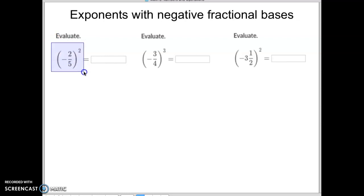This first one looks a little difficult, but it's really not. All it means is that everything inside this parentheses goes to the second power. So the negative to the second power, a negative times a negative would be a positive. Two to the second power would be four. Five to the second power would be twenty-five. So we would have a positive four over twenty-five.